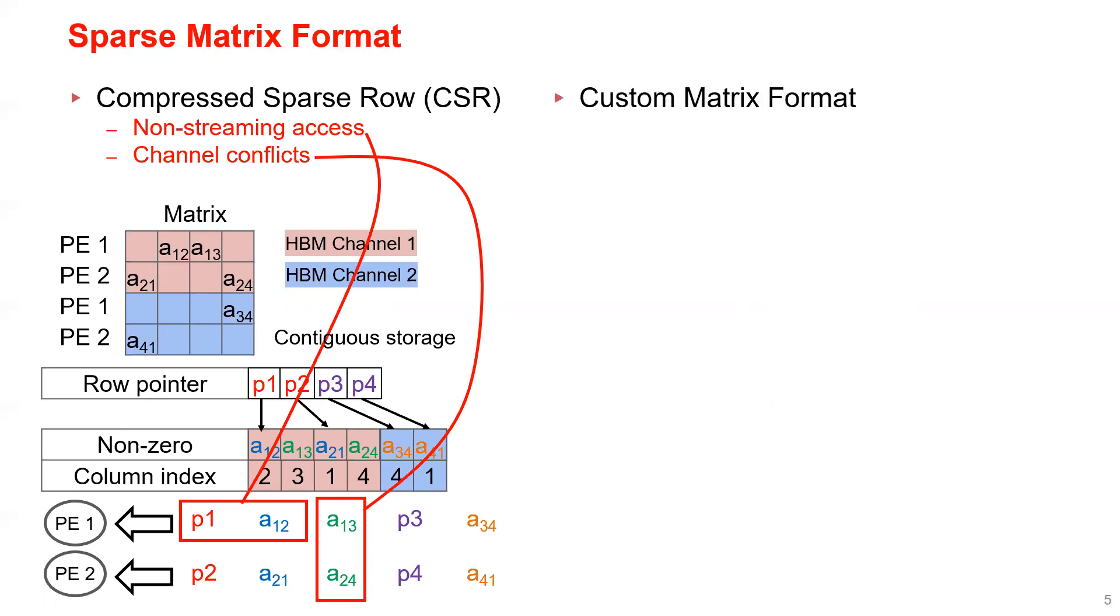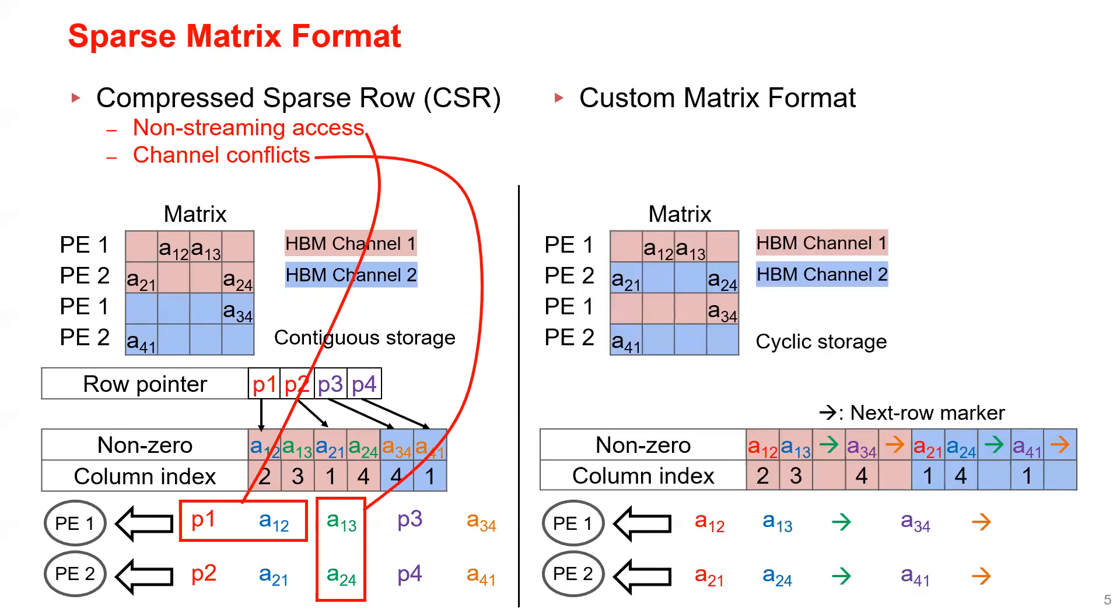On the contrary, our custom matrix format uses next row markers to get rid of the row pointer array and ensures full streaming access. We also store the rows cyclically in the HBM channels to prevent channel conflicts. In this way, we can fully utilize the HBM bandwidth.